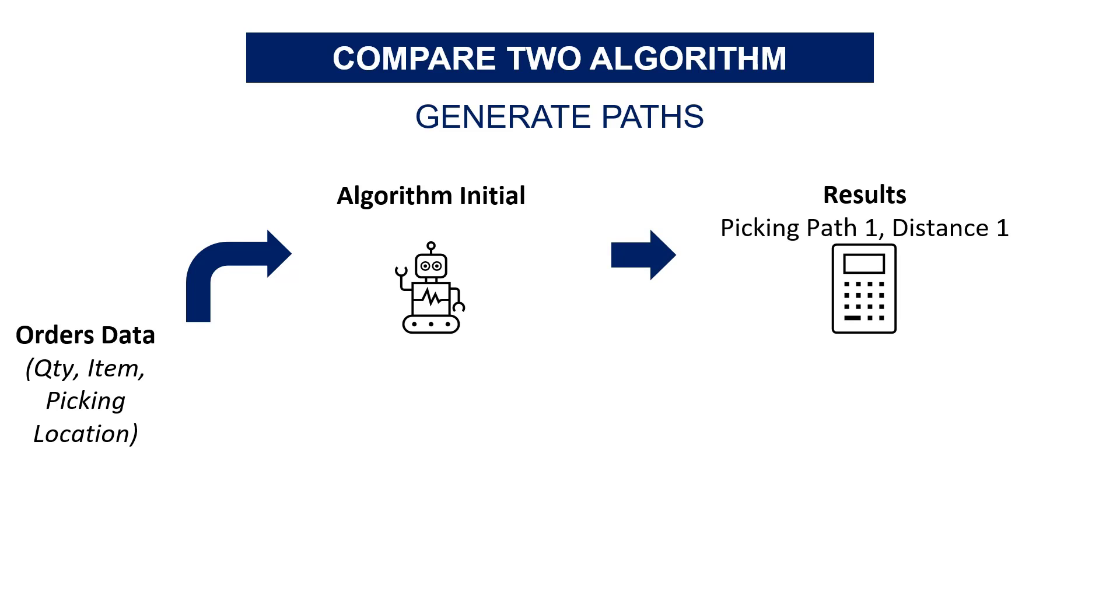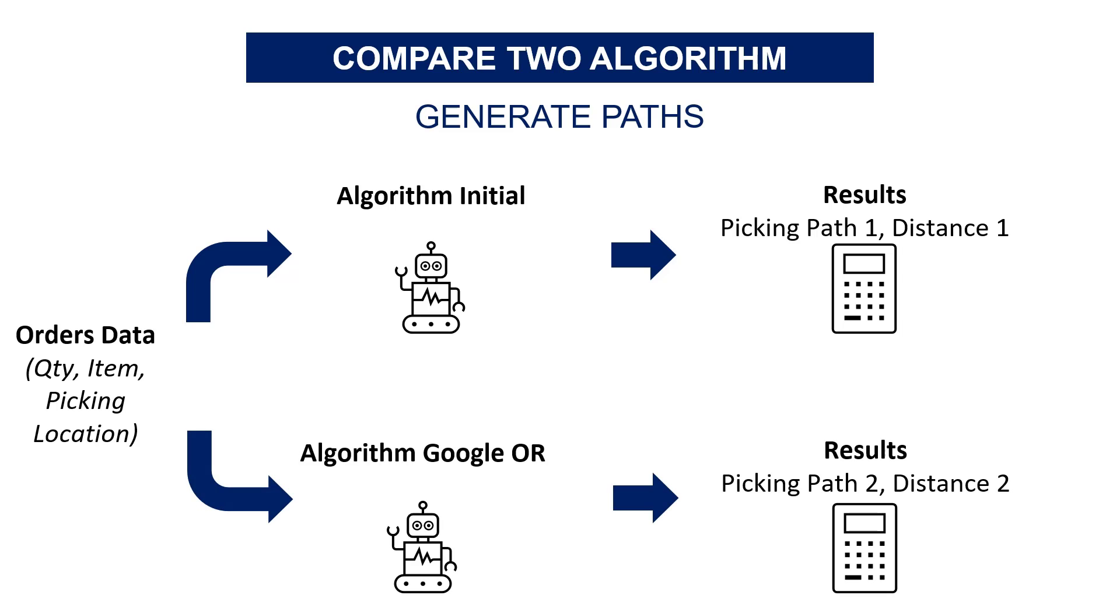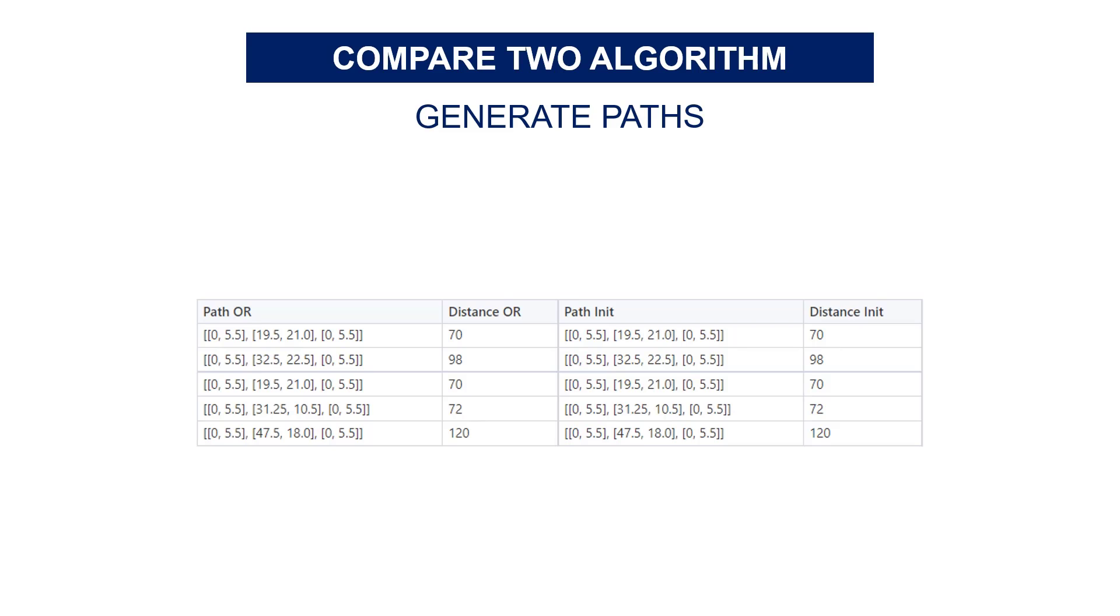And it will return a set of picking paths that are minimizing the total walking distance and the distance for each of the paths. And finally, you do the same with the Google OR solution.